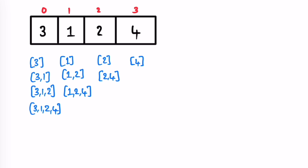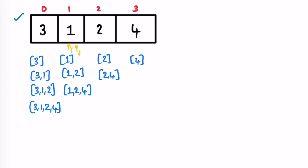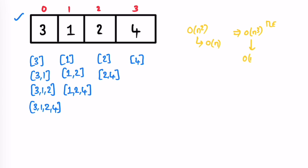Let's take the given input array. The brute force approach uses two for loops with i and j pointers. First you take subarrays starting from index 0, then i moves forward and j resets. Finding all subarrays takes O(n²) time, and finding the minimum inside each takes O(n), giving O(n³) total. You can optimize to O(n²) by tracking the minimum while forming each subarray, but that also gives a TLE due to large constraints.